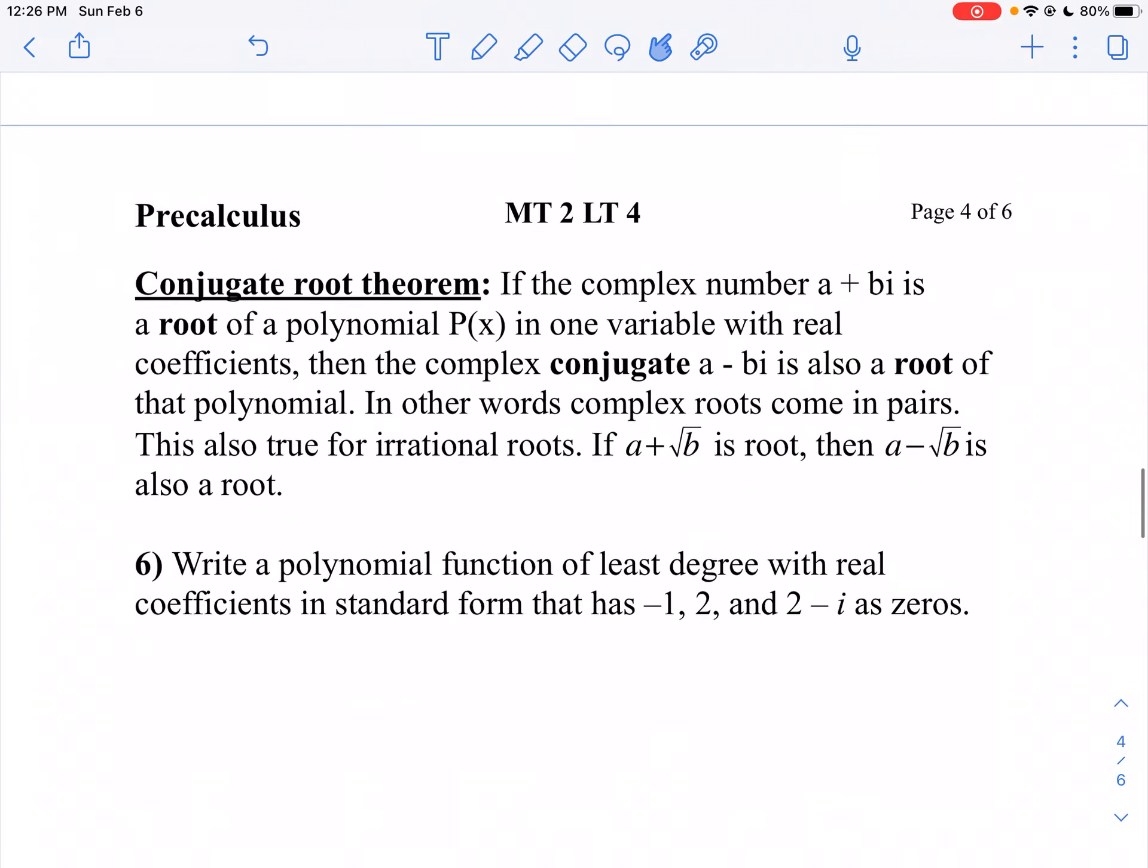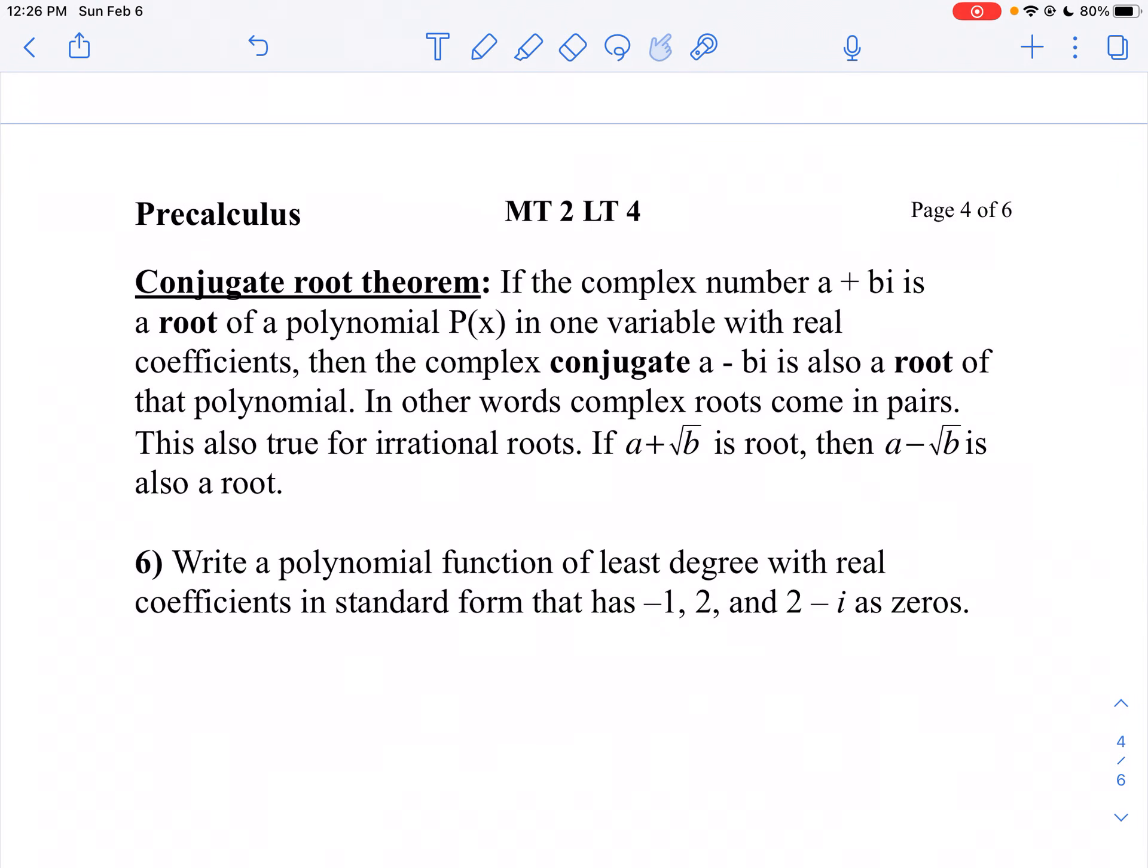Continuing on, we have our conjugate root theorem. The conjugate root theorem tells us that if I've got a root of a polynomial that is complex or irrational, they come in pairs.